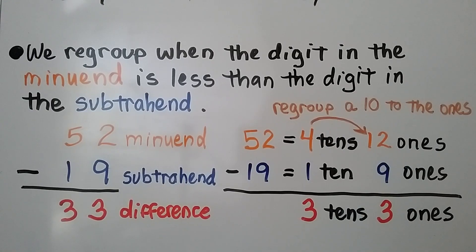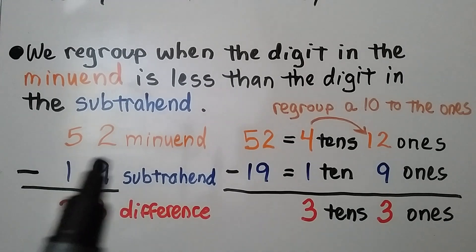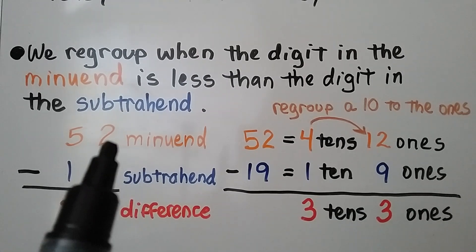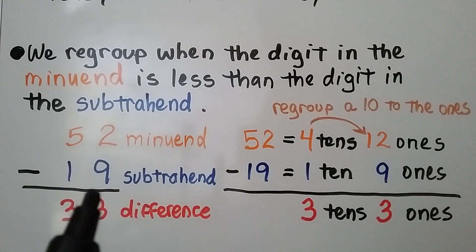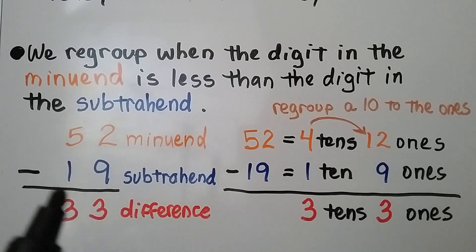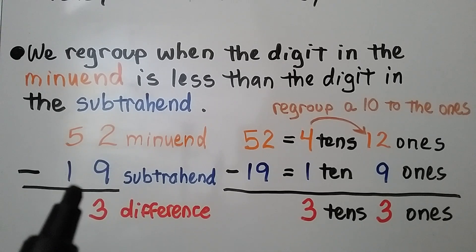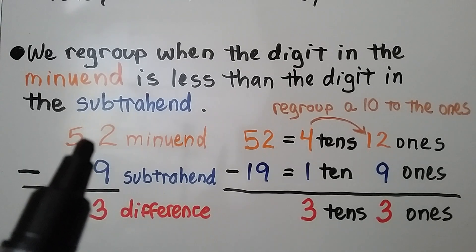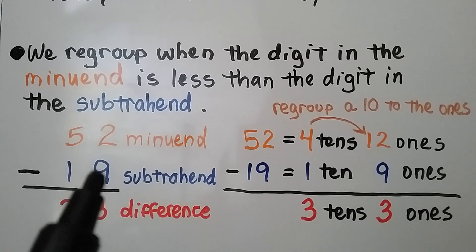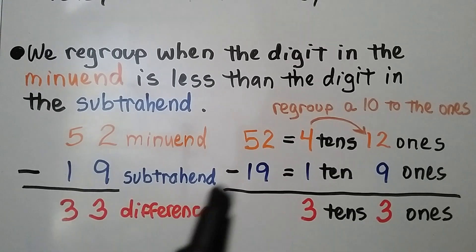We regroup when the digit in the minuend is less than the digit in the subtrahend. For example, we have 52 minus 19. We have to start with 2, take away 9, but we can't do that — it's not large enough.